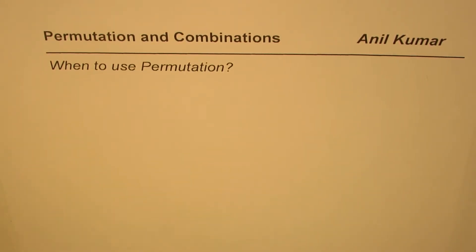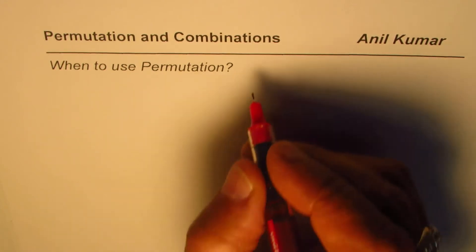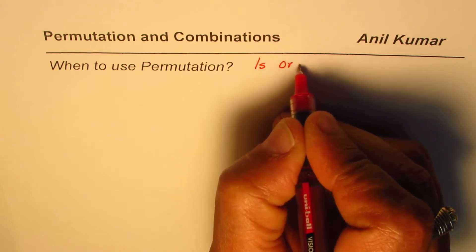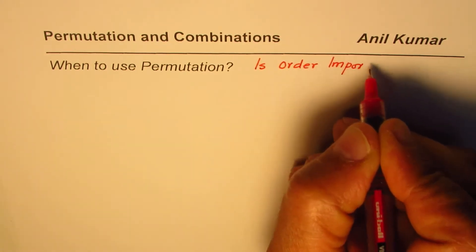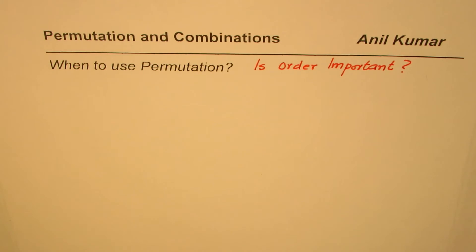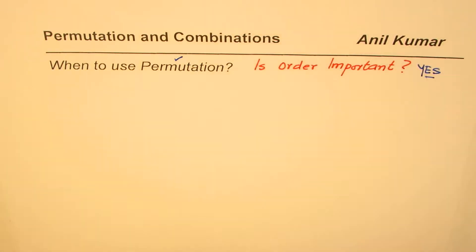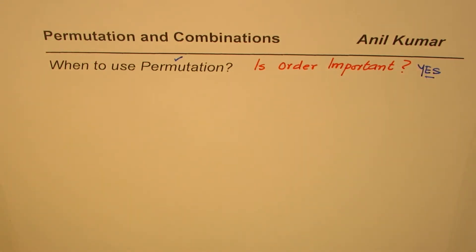I'm Adil Kumar and in this video we will learn when to use permutation and how to use permutation. The key question you need to ask is: is order important? This question decides whether we can solve the question by permutation or combination. If the answer is yes, then we use permutation.